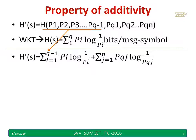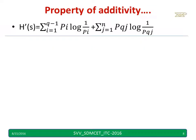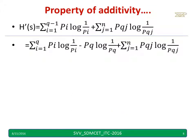I write the entropy equation for H'(S): H'(S) = summation i=1 to q-1 of pi * log(1/pi), plus the terms for pq1 to pqn. Now I use the same equation — I take the summation i=1 to q, but since I should only go to q-1, I have taken one extra term which I then subtract.